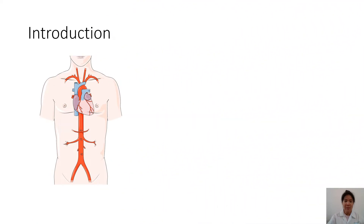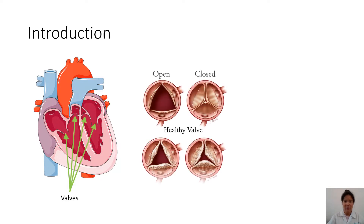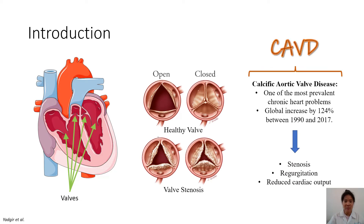Heart valves help us maintain proper direction of blood flow. However, valves are subject to diseases such as calcific aortic valve disease, or CAVD, which results in valve stenosis, regurgitation, and reduced cardiac output. It is one of the most prevalent chronic heart problems, and studies have shown an increase of over 100% in the last 30 years.